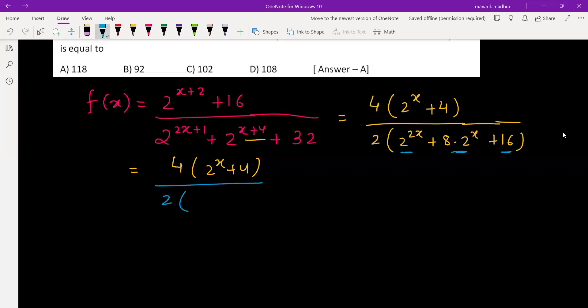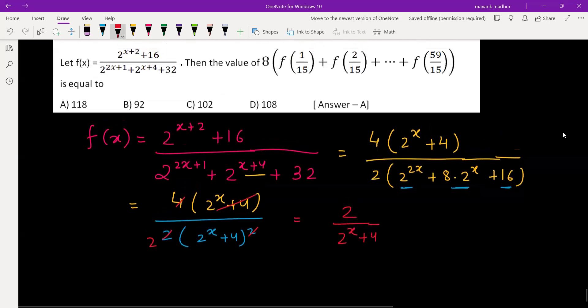So 2 raised to x plus 4 the whole square. We can cancel this and this, and we get it as 2 divided by 2 raised to x plus 4. This is your f(x).